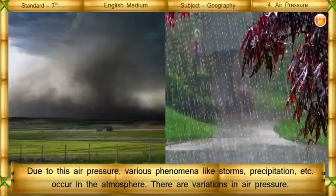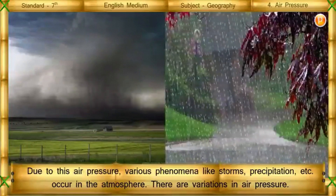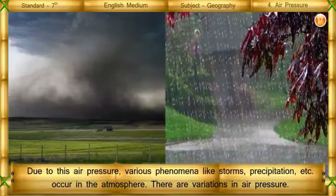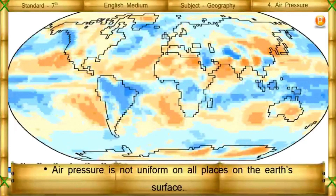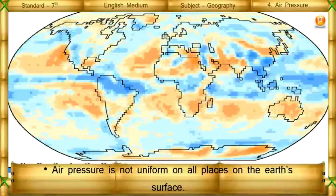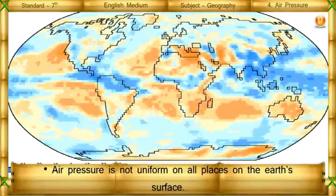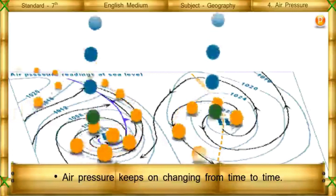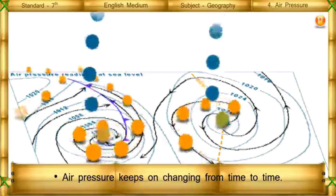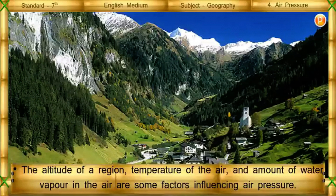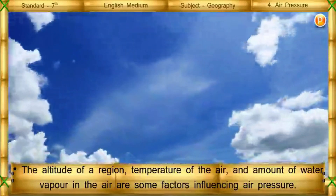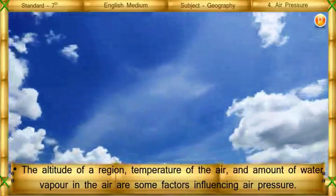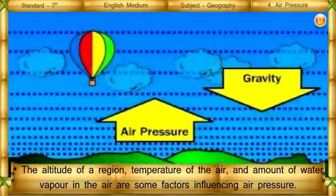There are variations in air pressure. Air pressure is not uniform at all places on Earth's surface, and it keeps on changing from time to time. The altitude of a region, temperature of the air, and amount of water vapor in the air are some factors influencing air pressure.